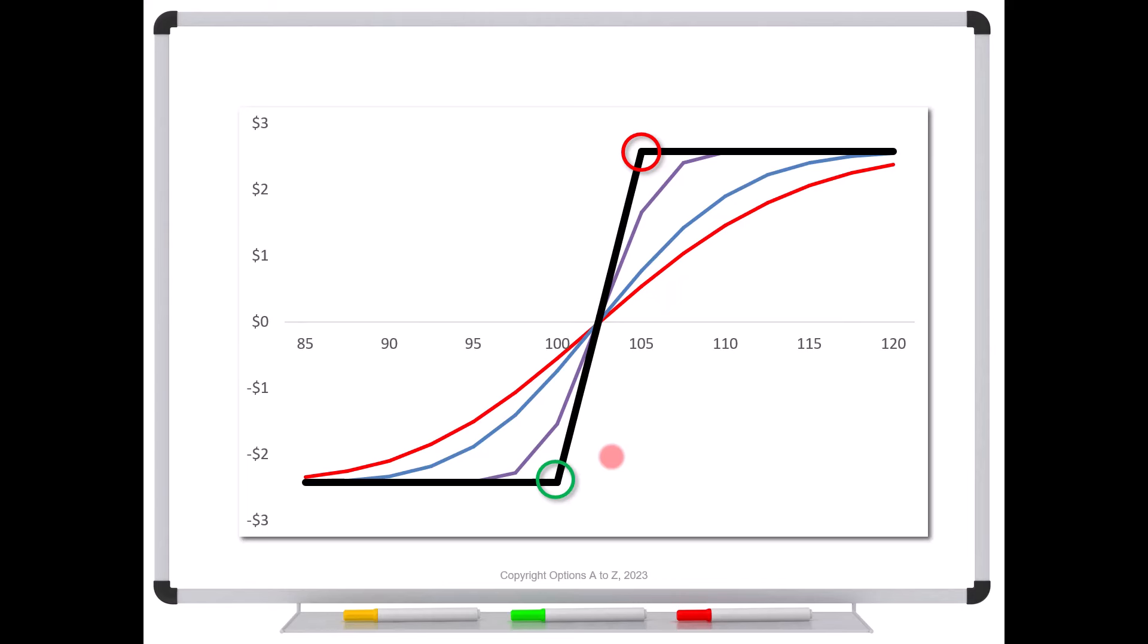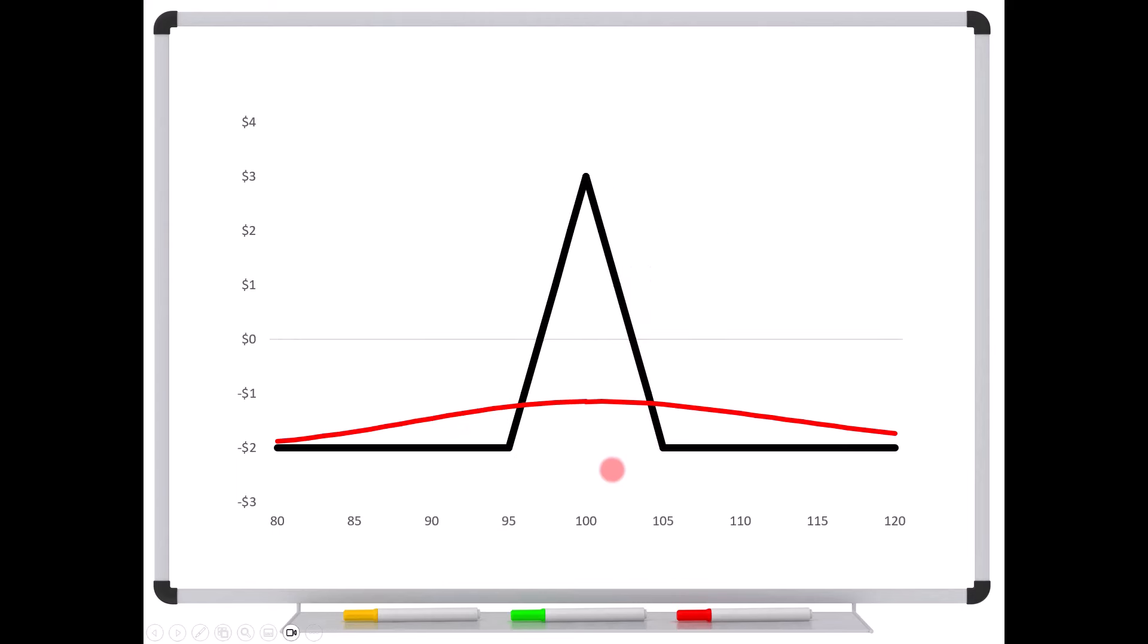Now, what about if we have three strikes? So, for instance, in a butterfly spread, maybe we have the 95, 100, 105 butterfly. And we can see we get a bend at 95, one at 100, and one at 105. These two down here are long positions. Up here is a short position.